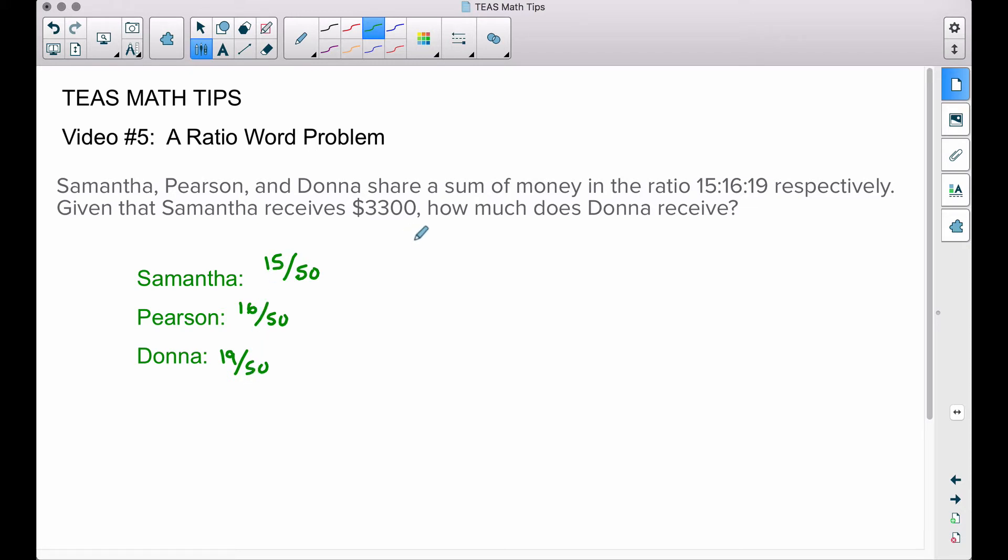Now we don't know in this problem right now how much money was there to be dispersed. All we know is that Samantha received $3,300. Well, $3,300 is this fraction of the entire amount of money that was distributed to him.